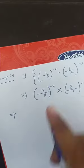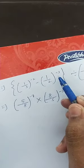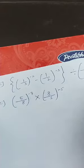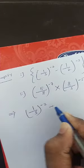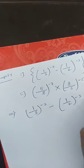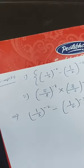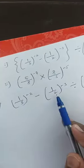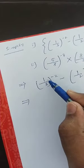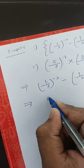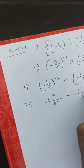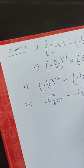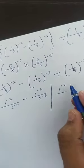Now simplify: (1/3)^(-2) - (1/2)^(-3), all divided by (1/4)^(-2). First, apply the power separately to numerator and denominator: we get [1^(-2) / 3^(-2)] minus [1^(-3) / 2^(-3)], all divided by [1^(-2) / 4^(-2)].